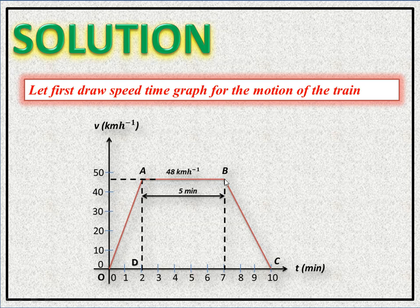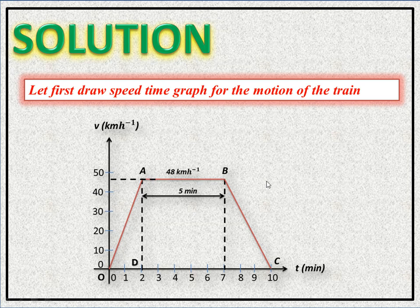Finally, in 3 minutes it comes to zero velocity. We mark these points on the speed-time graph and identify the shape formed as a trapezium O, A, B, C.